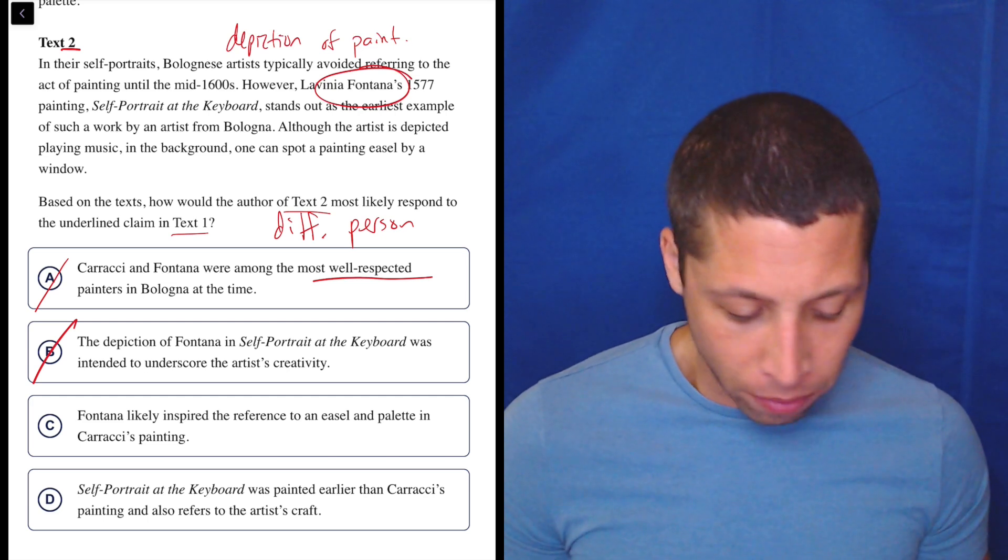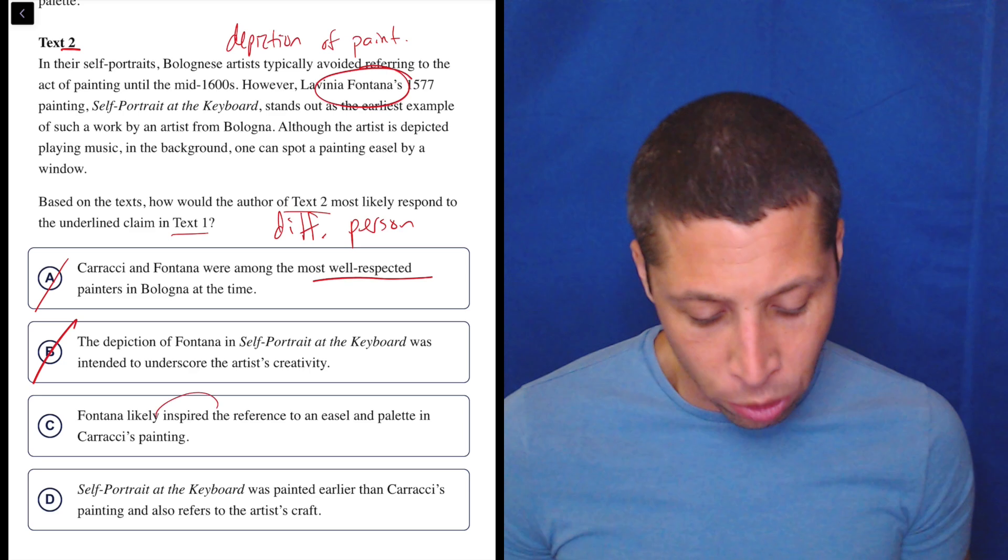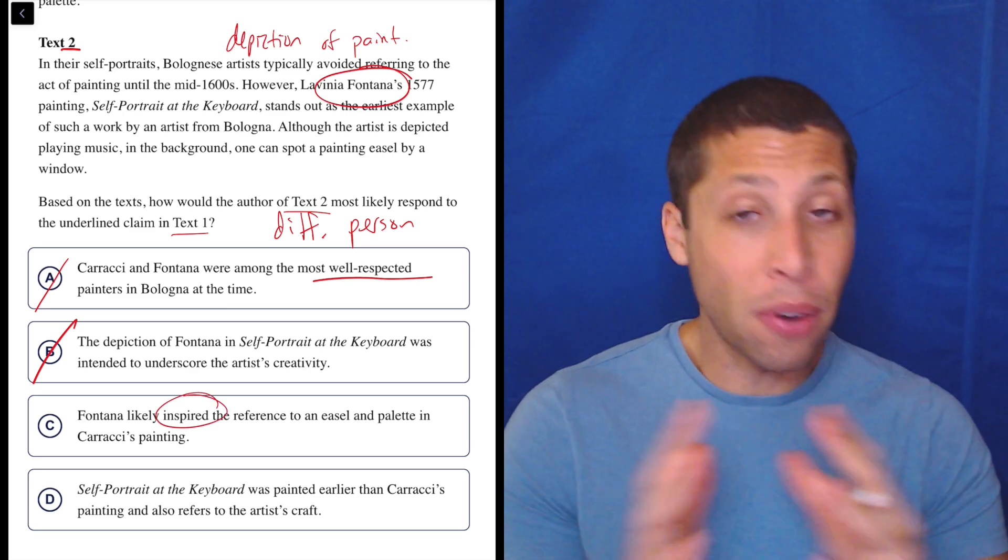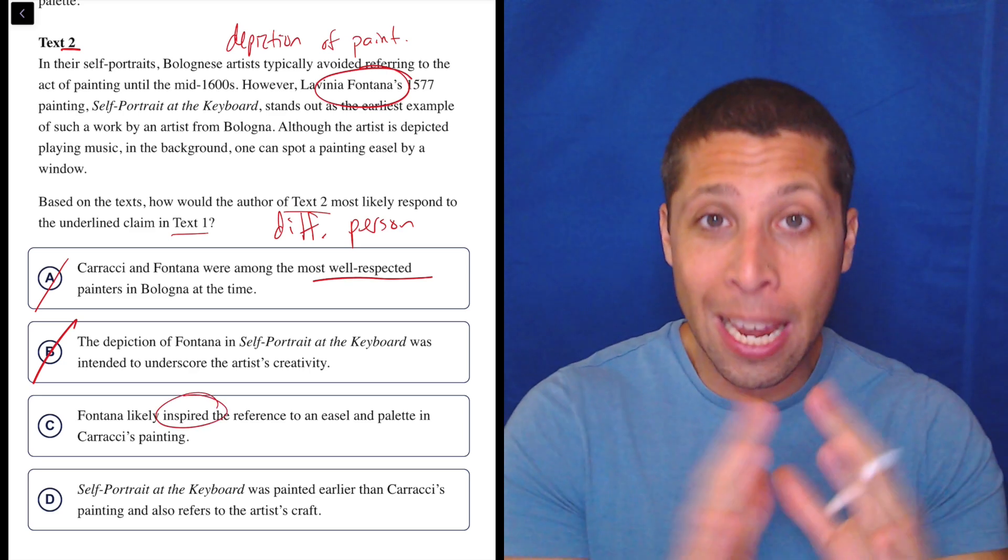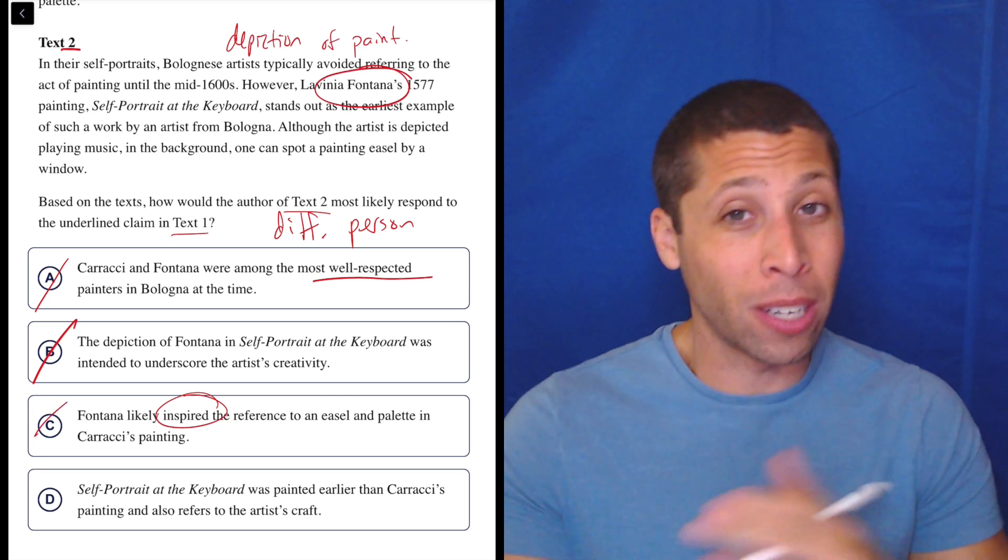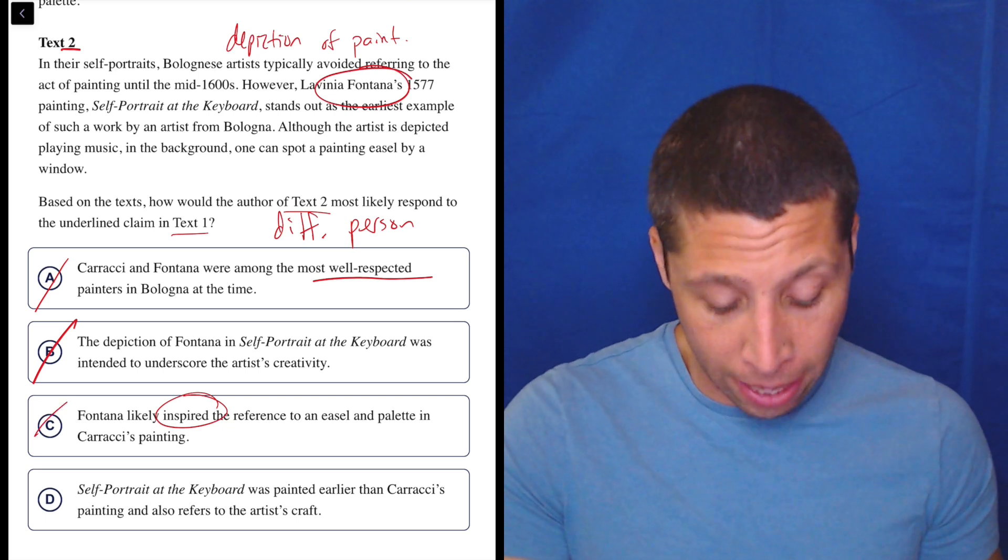C, Fontana likely inspired the reference to an easel and pallet in Karachi's paintings. No, this is way too strong. We never have any connection between these two people, right? They're just different people named by the different texts. So to say one inspired the other, very big claim, very strong.